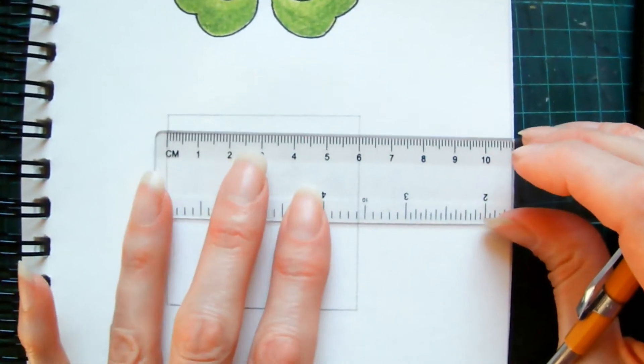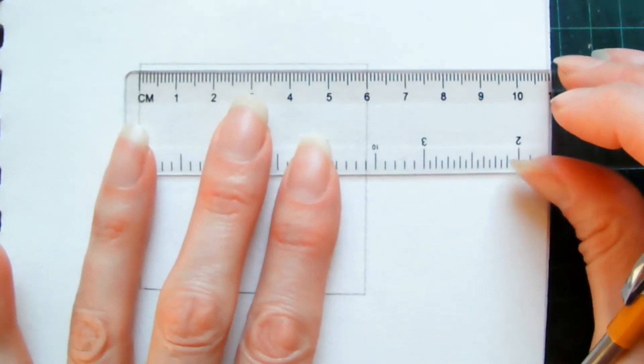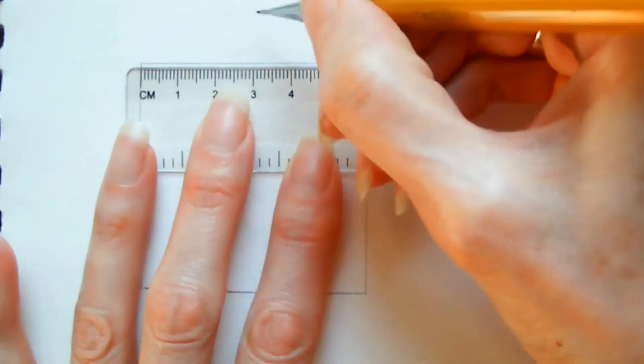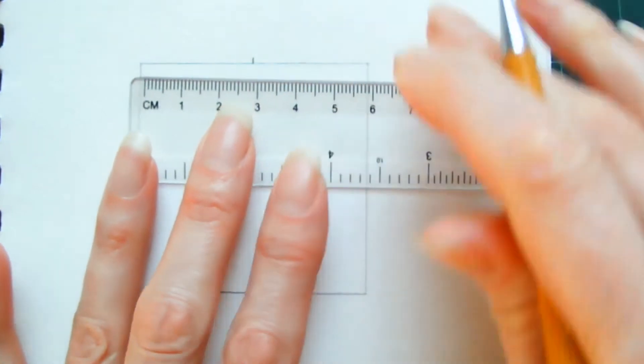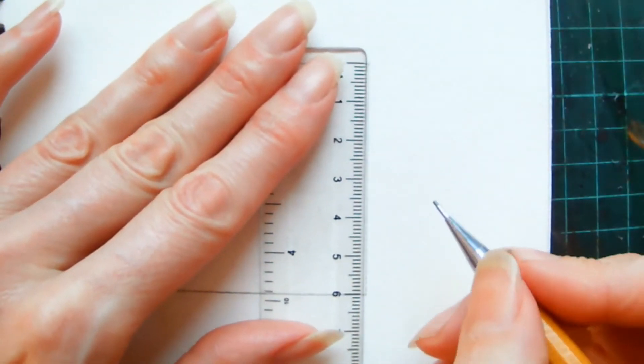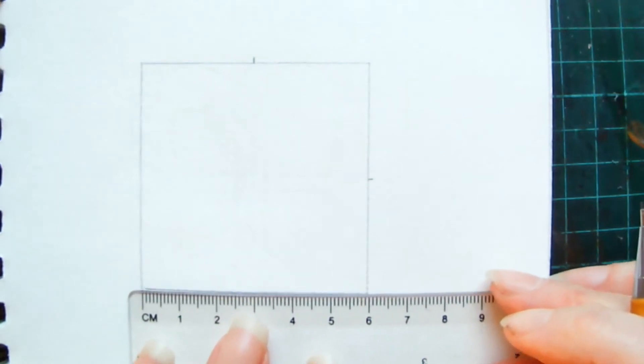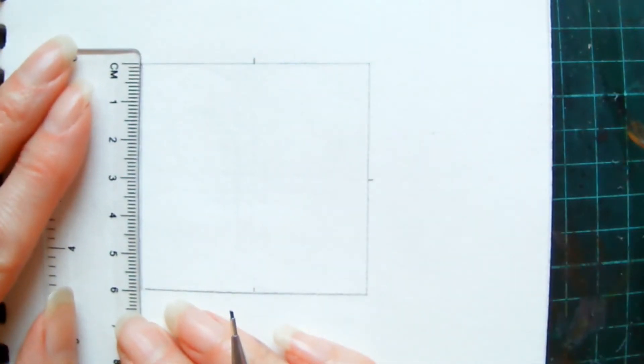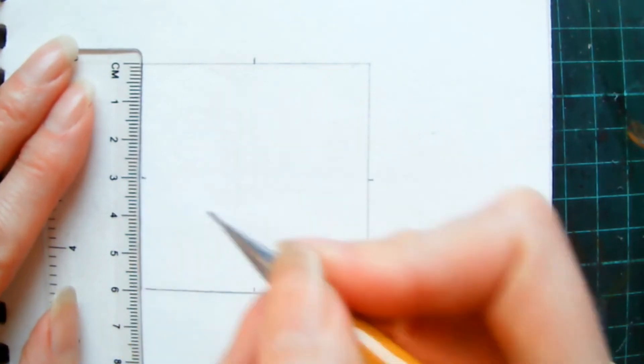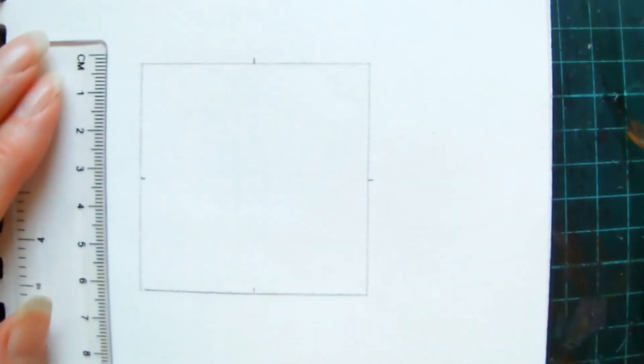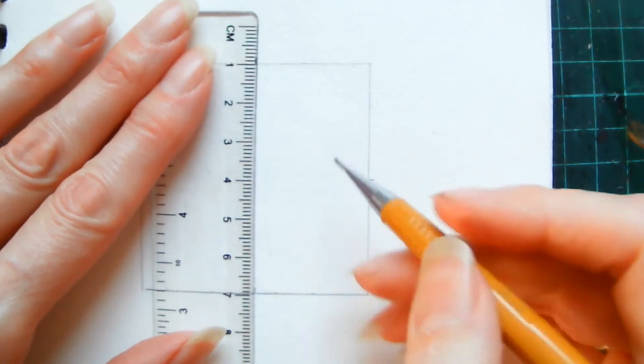And then once you've drawn your square, you're going to mark off the halfway point along each of the edges, so three centimeters for me. And then you're going to join those halfway points with a line.